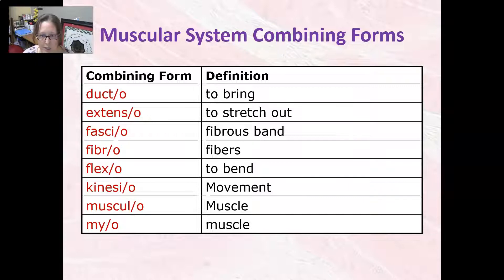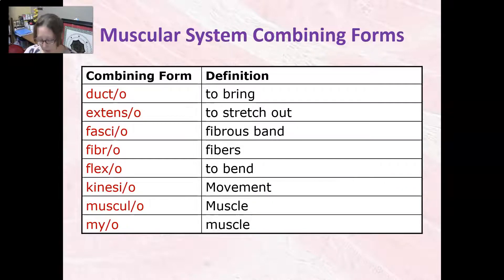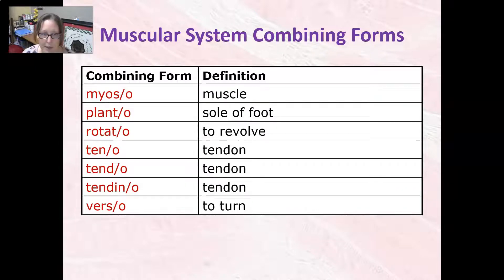Extenso means to stretch out, like extension. Fascio is a fibrous band — think fascia. Fibro refers to fibers, like muscle fibers. Flexo means to bend, like flexion. Kinesio means movement, and musculo means muscle — but so does myo and myoso.